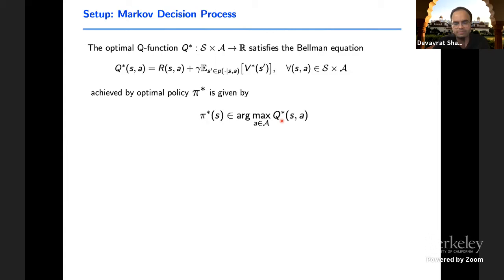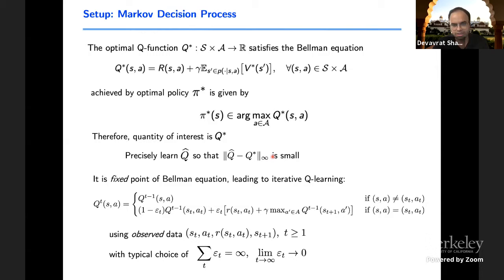The value function at a given state is nothing but the maximum over actions for Q defined at that state. This Q function gives you explicitly what the optimal policy π* is. So really, one way to think about RL is simply looking for estimating Q or Q star.